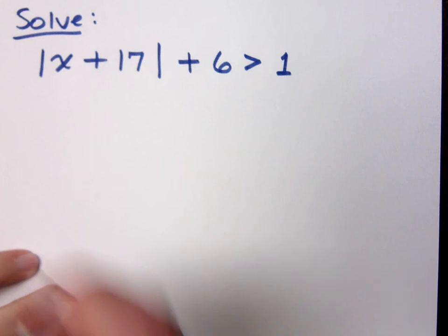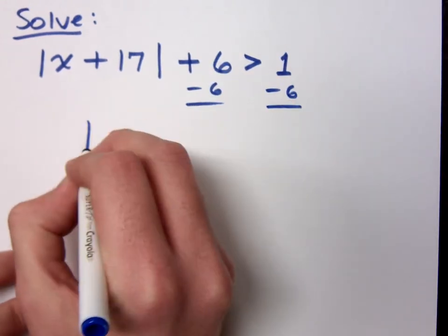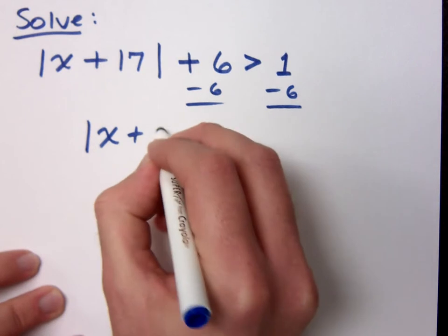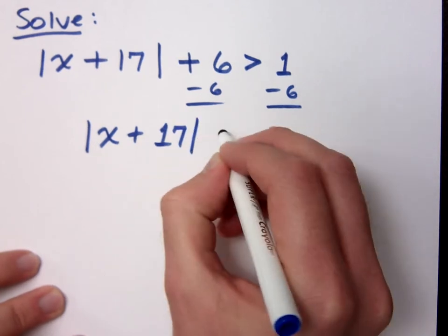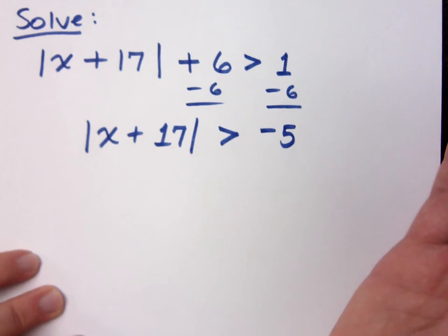Move the 6 over. So what do we have? The absolute value of x plus 17 is greater than what? So this is no solution, right?